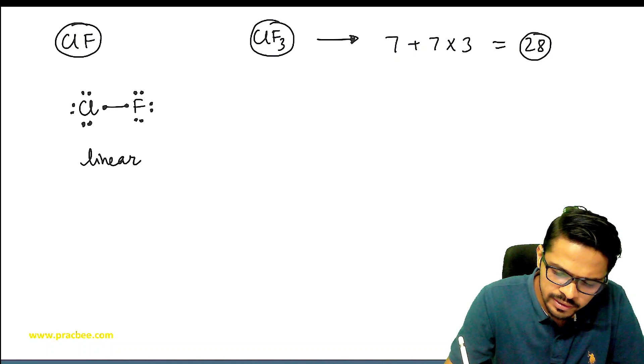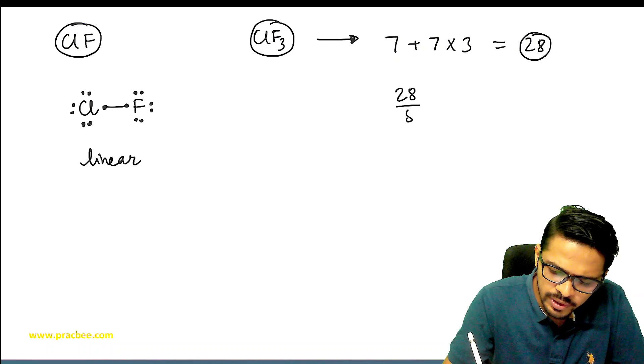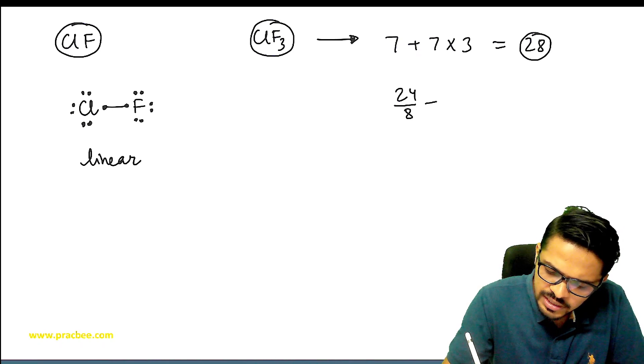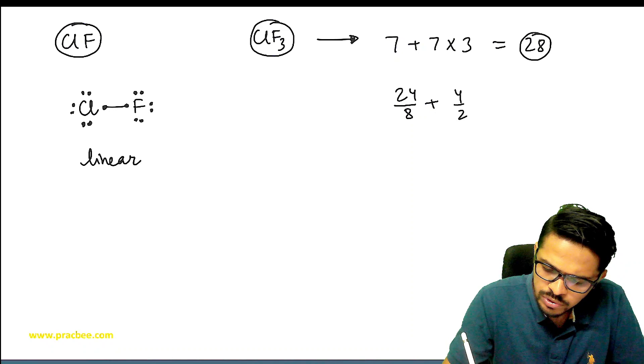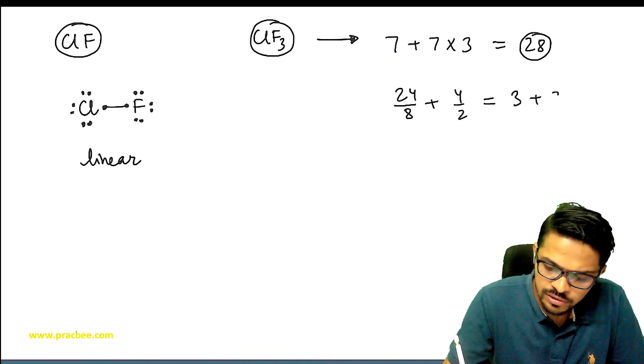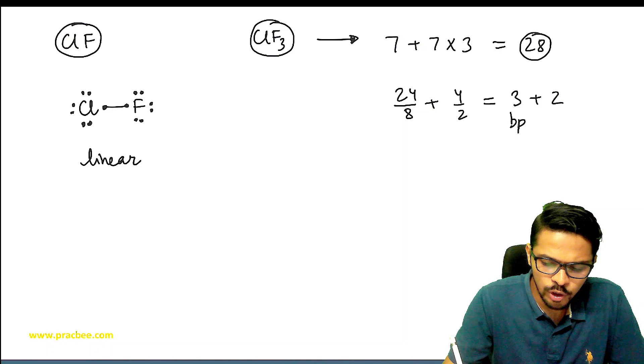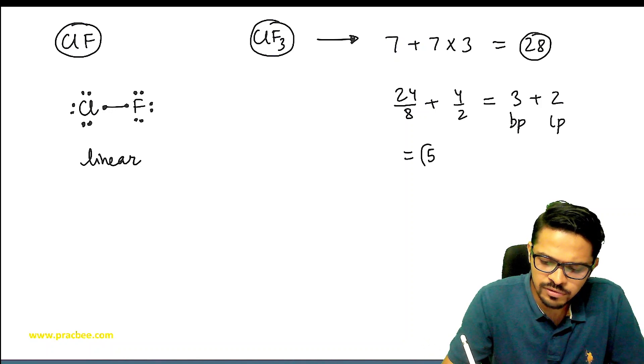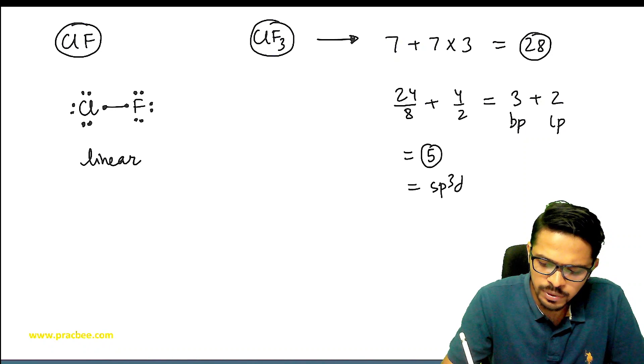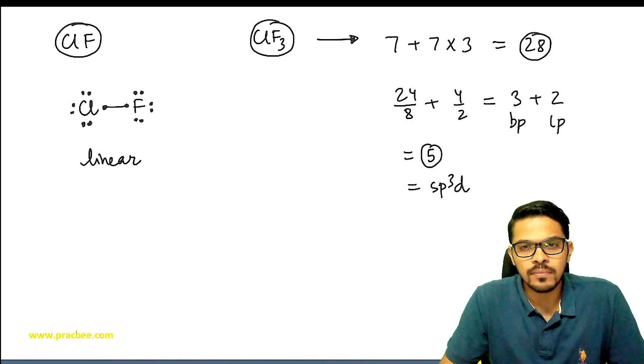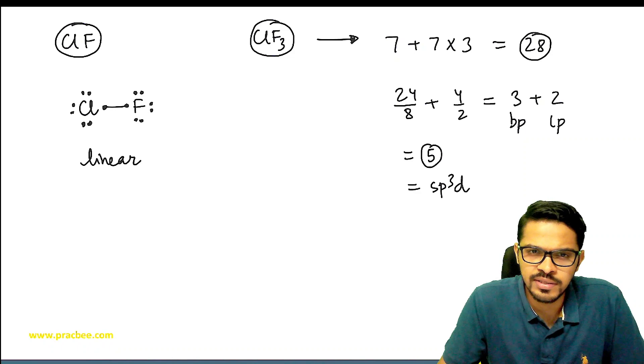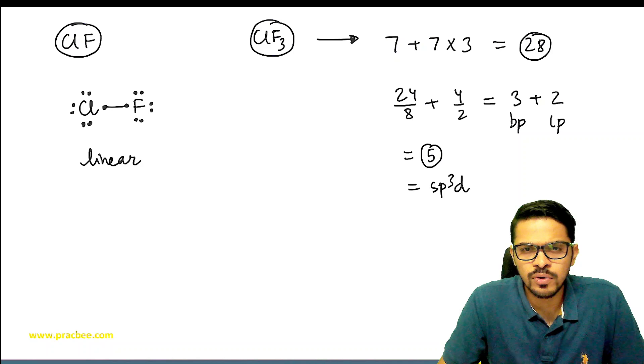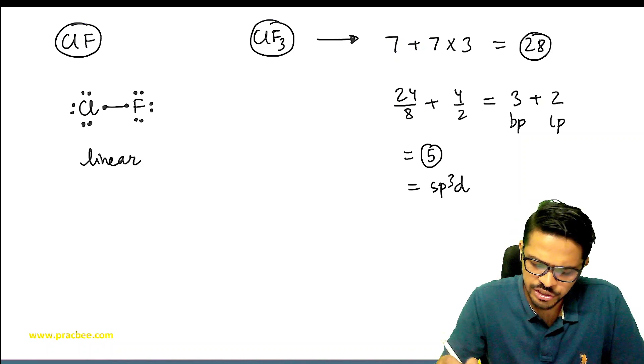Now let's talk about ClF3. To find its hybridization, we count total number of valence electrons, which is 28. Divide by 8, we get 24. The remainder divided by 2 gives us 3 bond pairs and 2 lone pairs, total 5. So hybridization is sp3d. I hope you all know how to calculate hybridization.